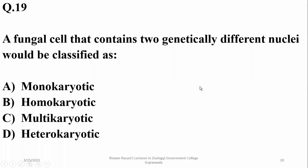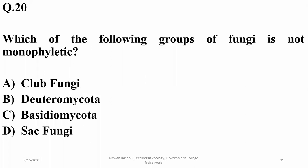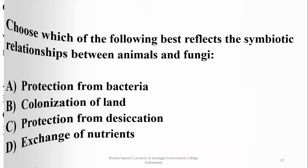Number 19: A fungal cell that contains two genetically different nuclei would be classified as heterocaryotic fungi. Which of the following groups of fungi is not monophyletic? It is deuteromycota. Some writers say zygomycota is polyphyletic as well, but deuteromycota have fungal collections from different groups in which sexual reproduction has not been observed.